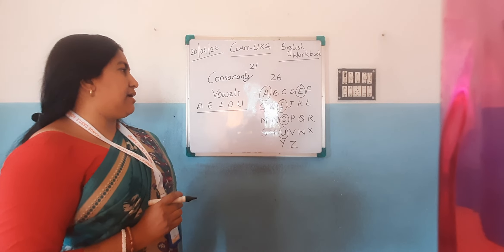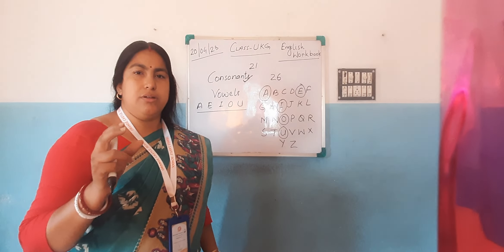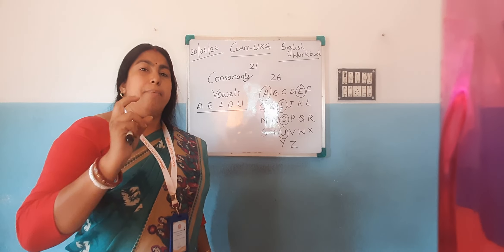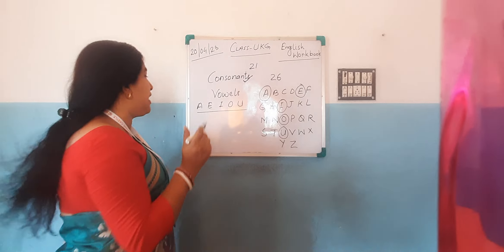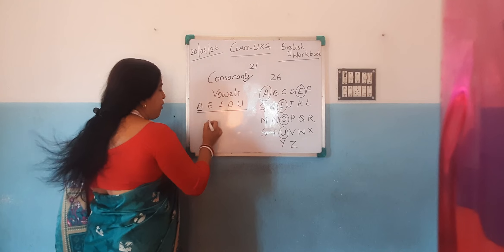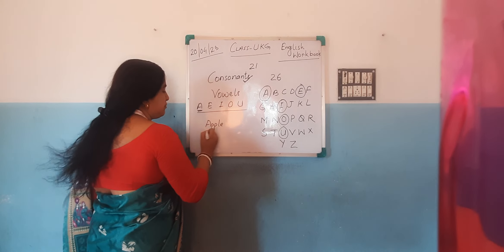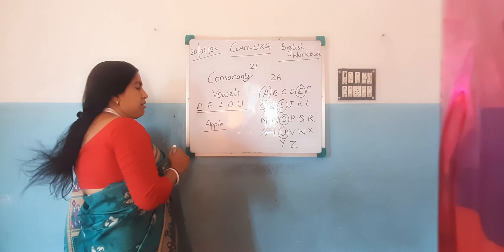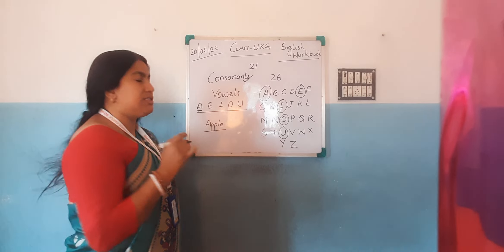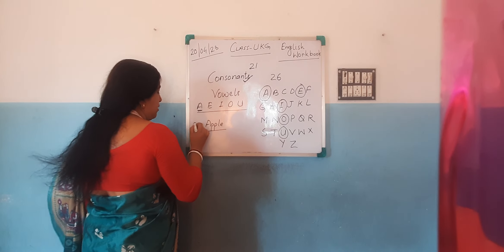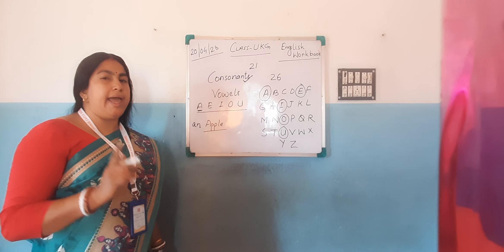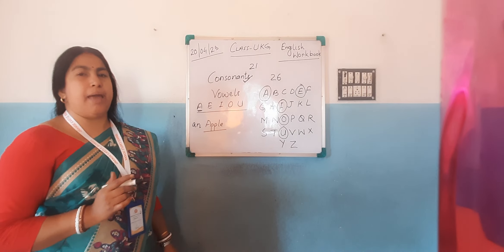Now, another thing. When a word starts with a vowel — for example, 'a' for apple — when a word starts with a vowel, before that word we use 'an'. So we say 'an apple', not 'a apple'.